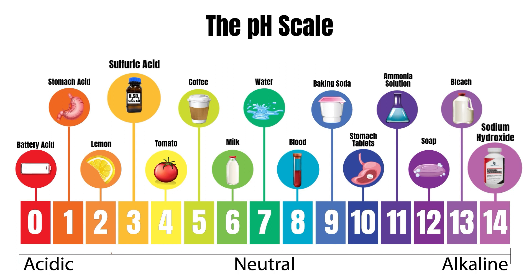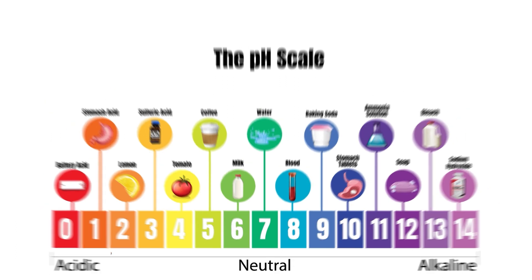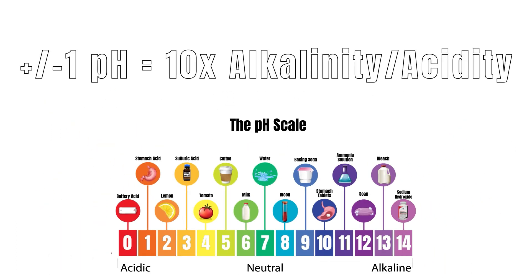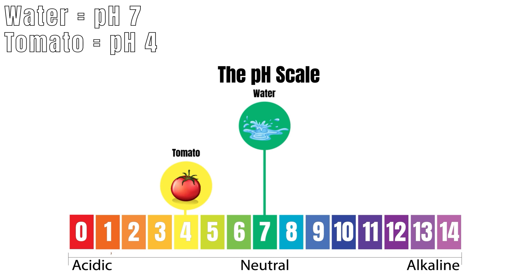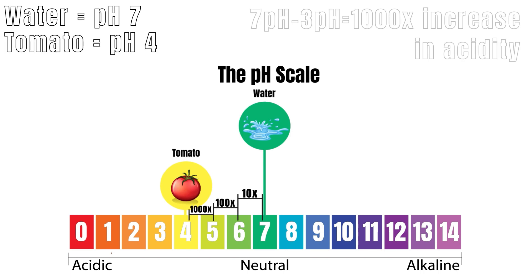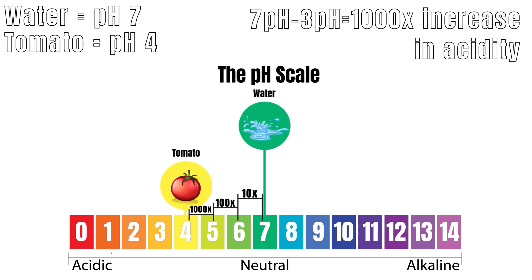Either one can do permanent damage to the skin. Remember this: for every increase or decrease in alkalinity or acidity, that is a tenfold increase or decrease of acidity or alkalinity. For example, water has a pH of 7, so a weak acid with a pH of 4 is not 3 times as acidic, but 1,000 times as acidic as a 7, based on a logarithmic scale.